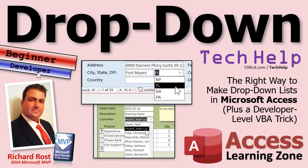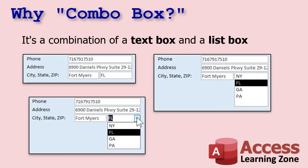Why do they call it a combo box in Microsoft Access? It's a combination — a combo — of a text box and a list box. A text box is where you just type text, and a list box has a list of options you can pick from but you can't type values into it and the list is always open, so it takes up a lot of space. A combo box marries those two things together.